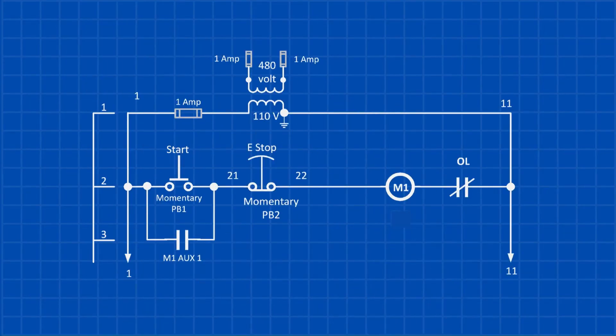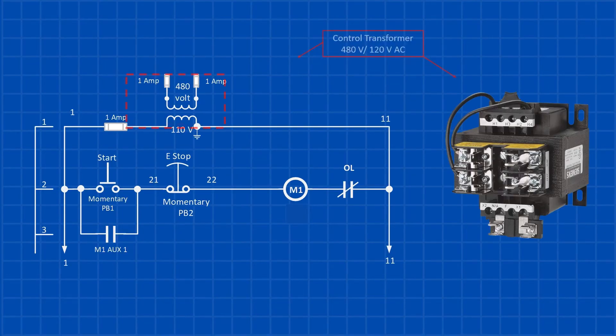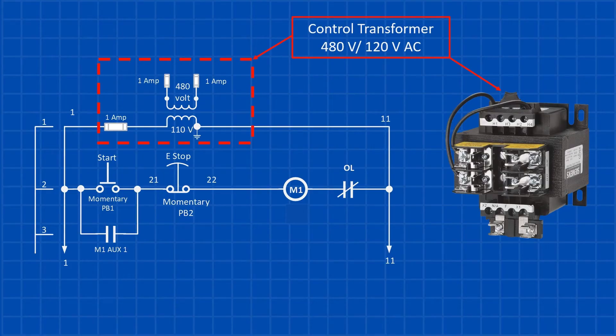Now let's take a look at the control circuit for our 30-horsepower motor. In its simplest form, the motor control circuit will look like this. The first component in our control circuit is the control transformer, which has primary and secondary fuses. It steps down the voltage from 480 volts to 120 volts AC, supplying power to the entire control circuit.